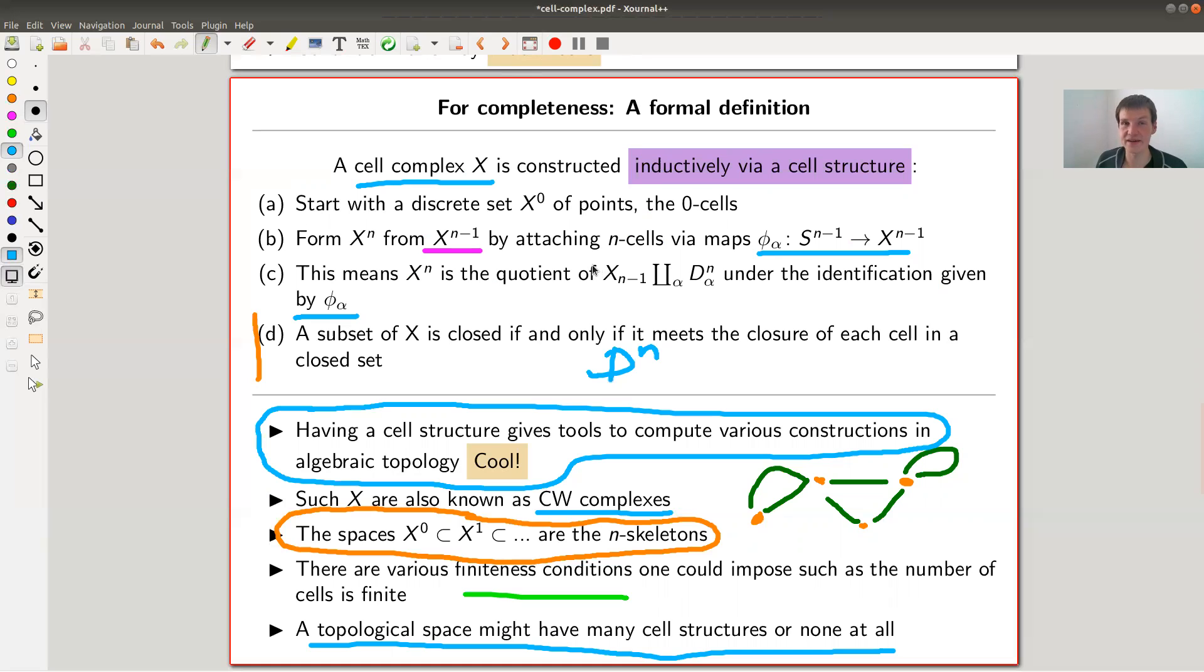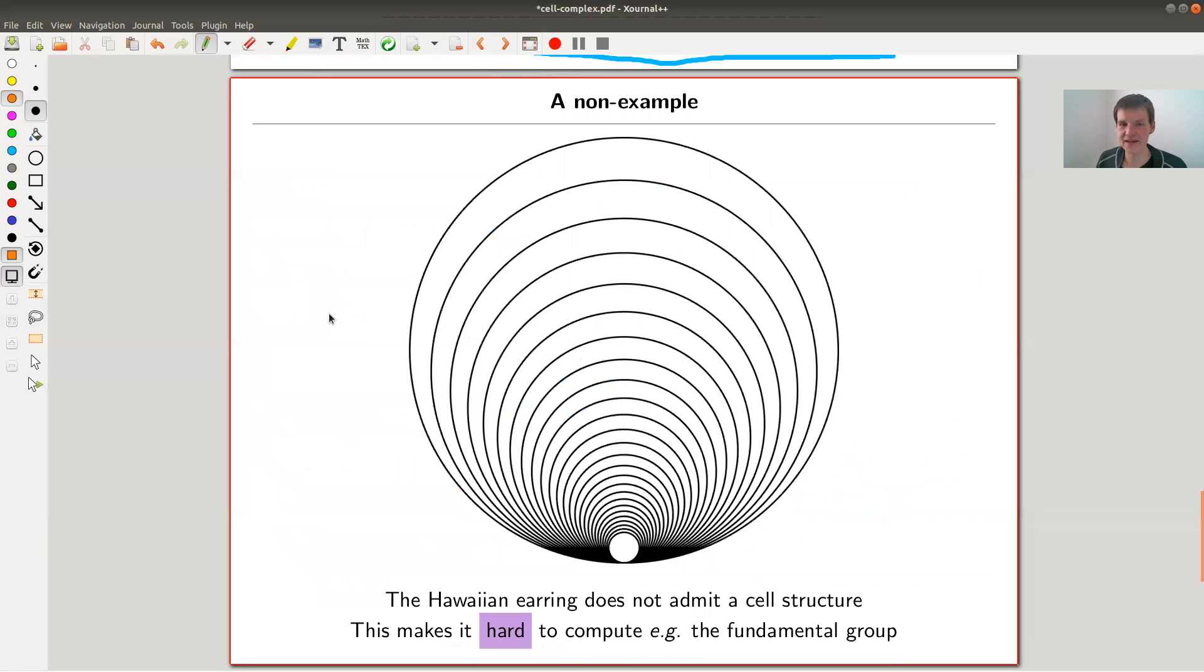But you might be really unlucky. Your favorite topological space might not have any cell structure at all. The standard example is the Hawaiian earring, which is this funny construction: you take a point, you glue to it a circle, you glue to it another circle, and so on, up to infinity. And you impose on it the topology of R^2 coming from the embedding. This is really crucial, because this makes the space different from just an abstract space with infinitely many circles glued together.